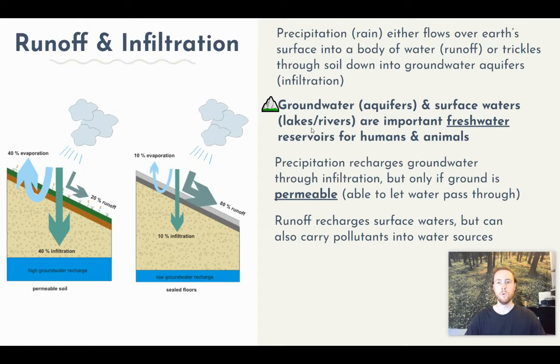One drawback of runoff is that it gathers pollutants on its way to the surface body of water, and we'll be talking about these issues in a lot more depth when we get to our water unit later in the year.